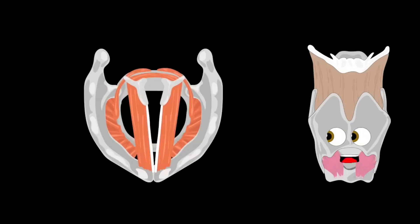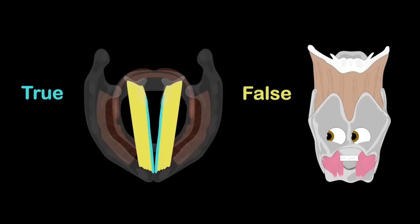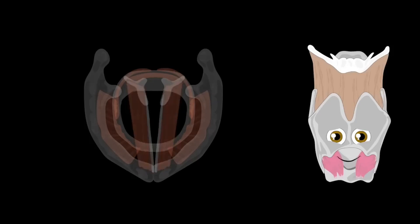Here we look down from above into the vocal folds once more. The true and false vocal cords — when opened up, your air flows. But you can't breathe when they're closed.